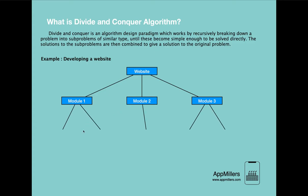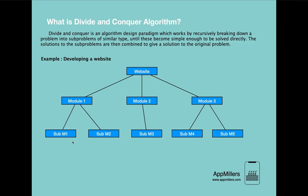So we divide further, creating submodule 1, submodule 2, submodule 3, submodule 4, and submodule 5. Based on these submodules, we will develop each one. Then we go further and divide these submodules into functions. So in one submodule we have function 1, function 2, function 3, and function 4, and it continues like this for all submodules.